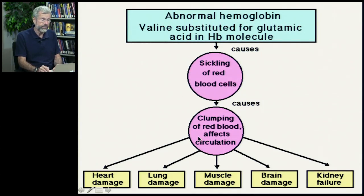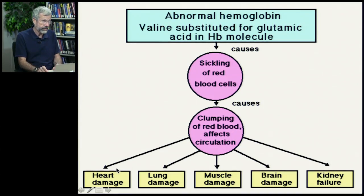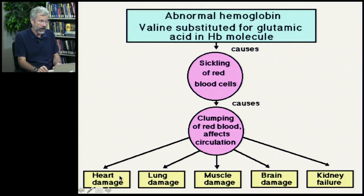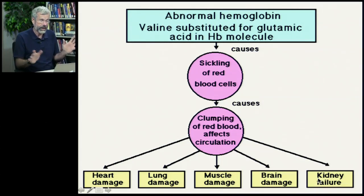There are all these problems from sickle cell — this is the classic case of pleiotropy. That one point mutation can affect the heart, lungs, muscle, brain, and kidneys. We're looking at sickle cell anemia because it provides the classic example of what's called heterozygote advantage.